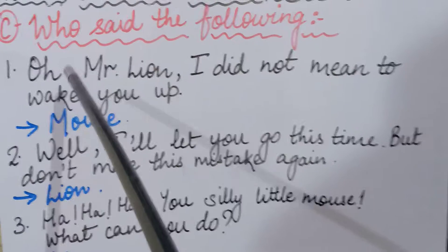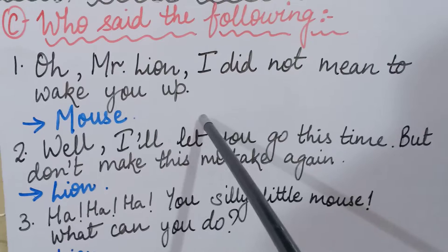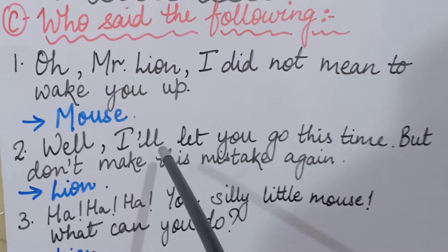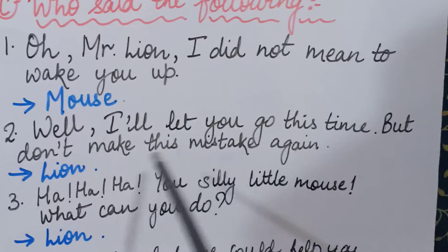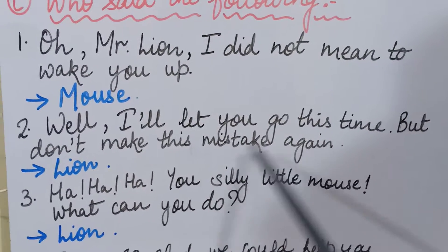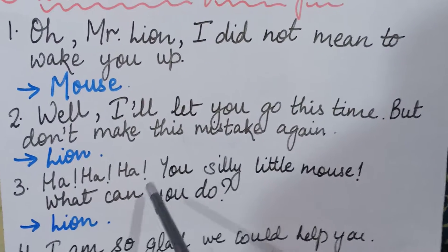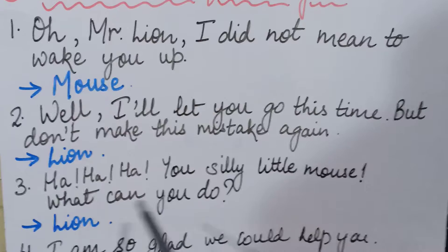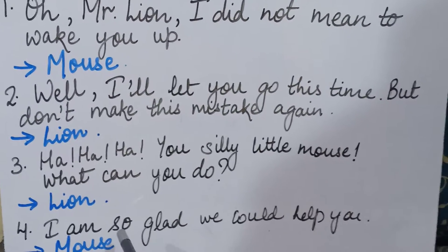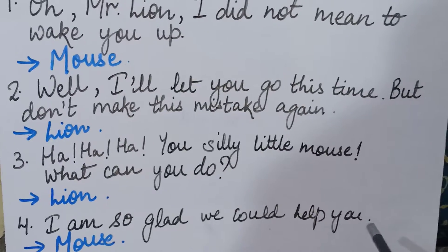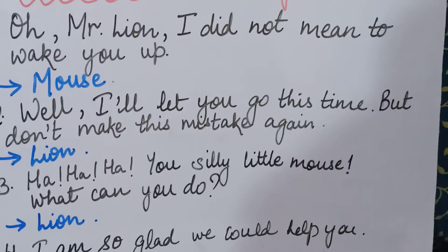Once again I am repeating these sentences — listen carefully. Those who missed any part can listen again. First sentence: 'Oh Mr. Lion, I did not mean to wake you up' — said by the mouse. Second sentence: 'Well, I will let you go this time, but don't make this mistake again' — said by the lion. Third sentence: 'Ha ha ha! You silly little mouse, what can you do?' — said by the lion. Fourth sentence: 'I am so glad we could help you' — said by the mouse. That is all for today, children.